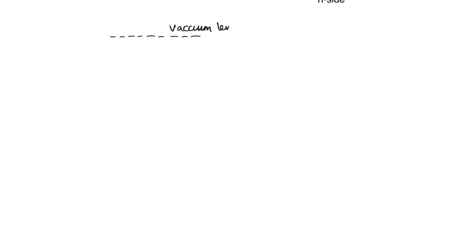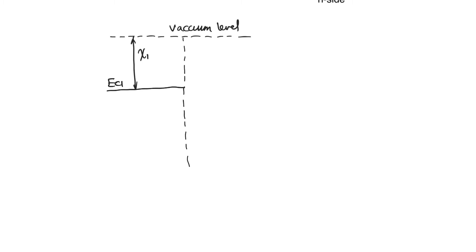The first step is to draw a constant vacuum level. The vacuum level here is flat, and then we have an interface. Left of the interface we have material 1, which has a certain electron affinity chi-1, giving us the conduction band edge EC1. It also has its own band gap EG1, so we can find the valence band edge EV1. Since it is doped at a certain level, we can find the Fermi level relative to the band edges: EF1.